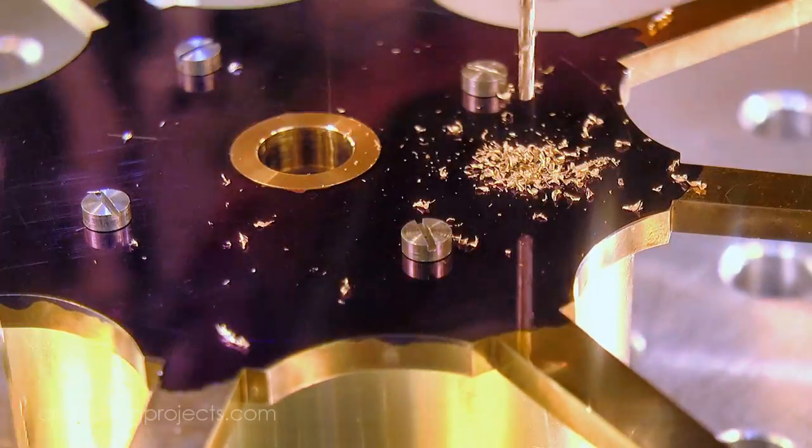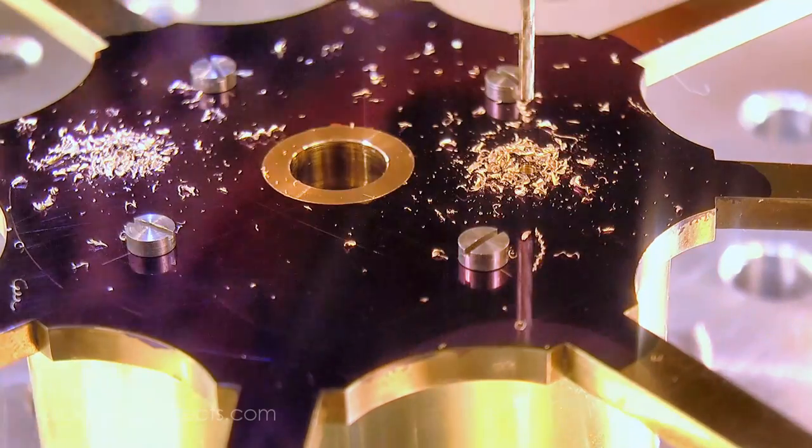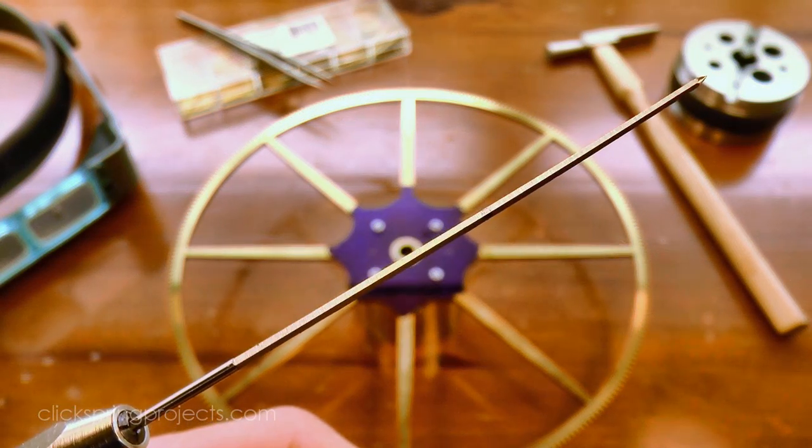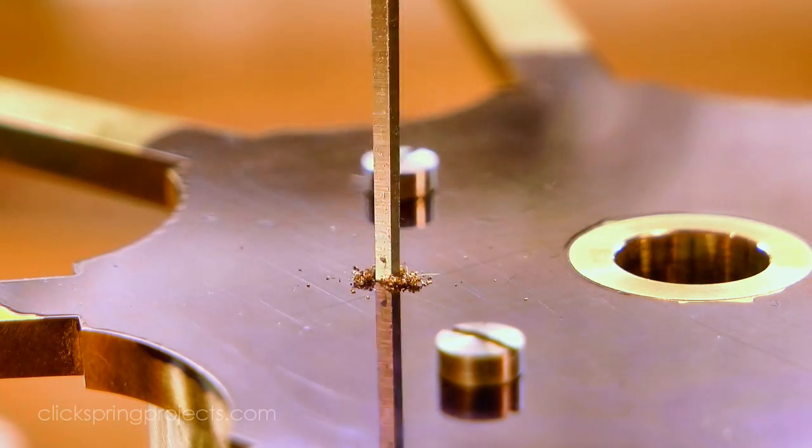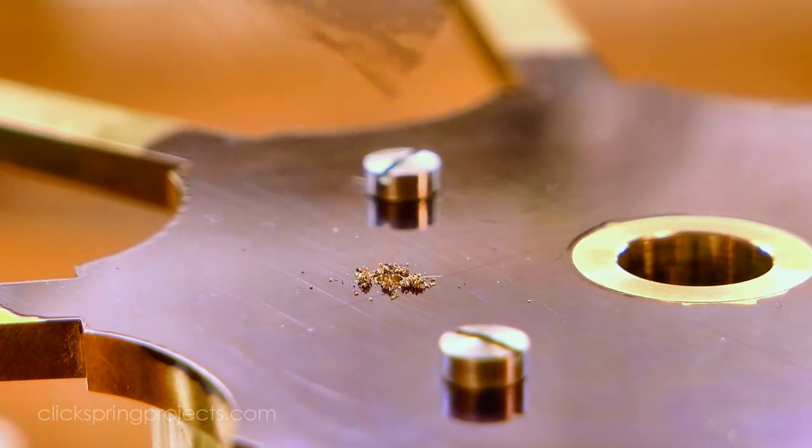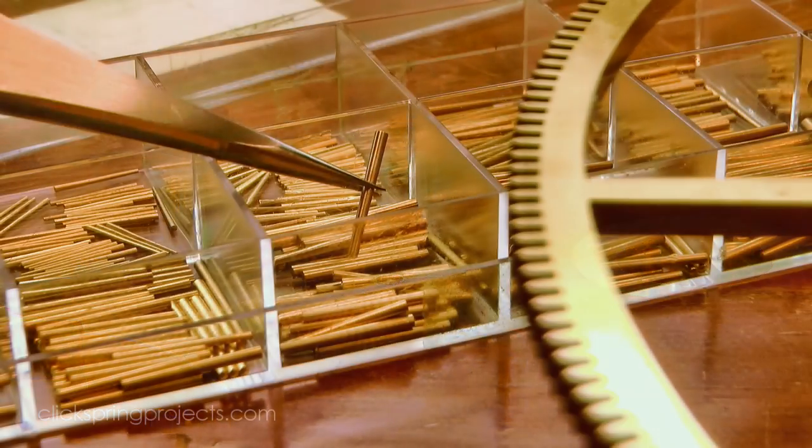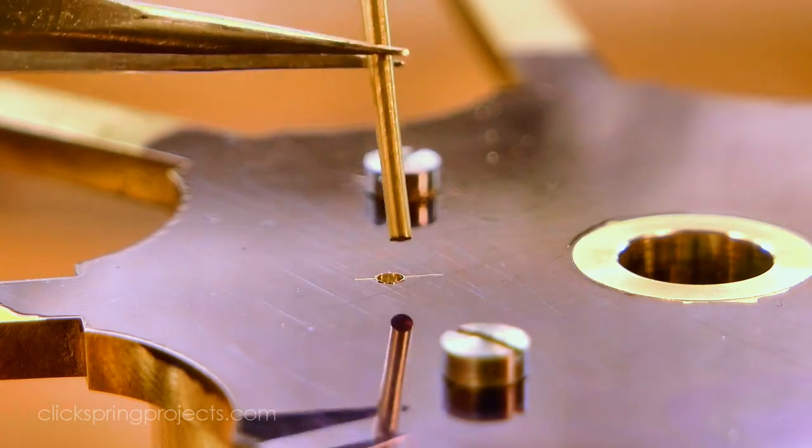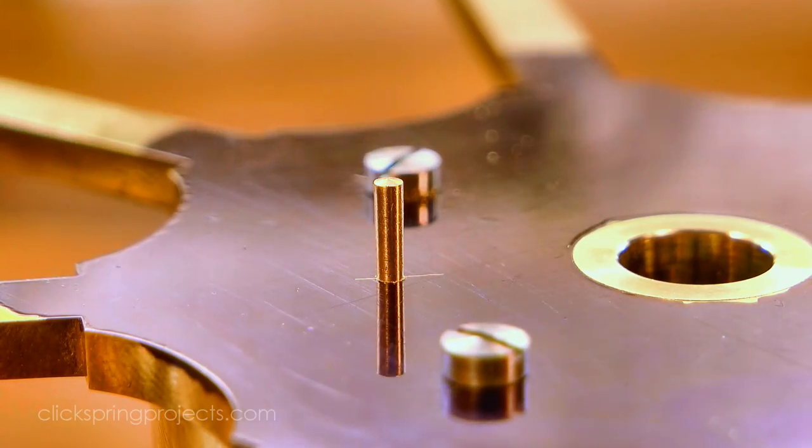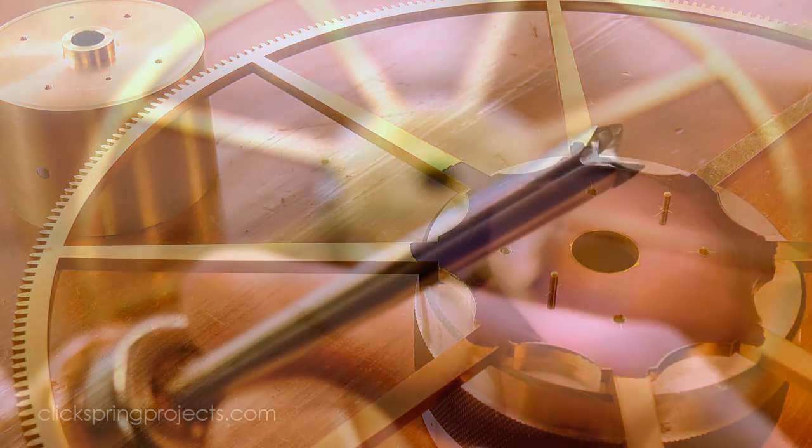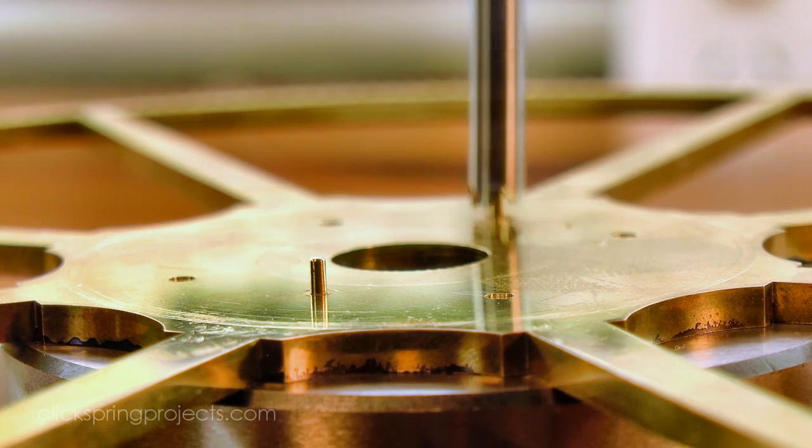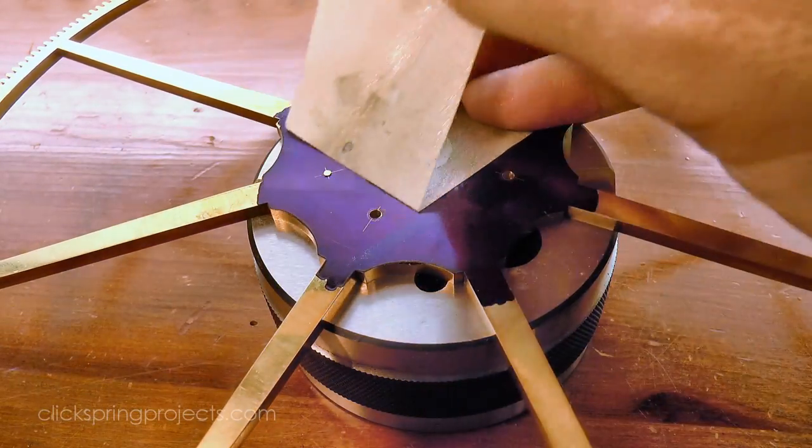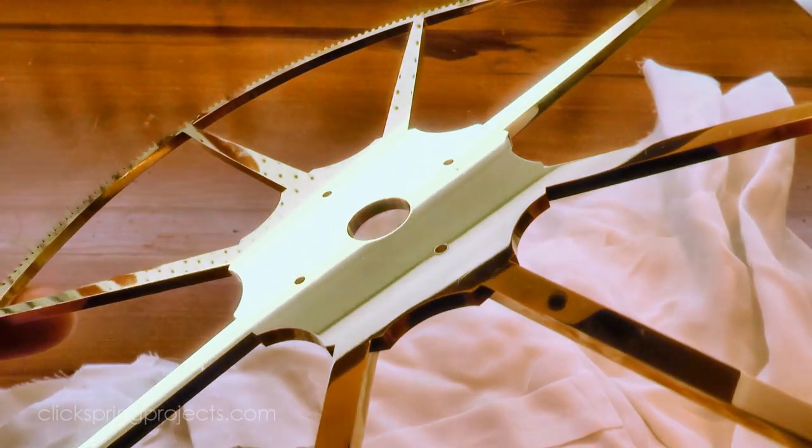I also put in a pair of register pins, to ensure that the wheel can only go on the one way when it's reassembled after servicing in the future. After the pins are inserted, I trim them back to stop them protruding into the barrel, and then chamfer the edges with this chamfering tool. A quick touch with a file and some emery paper, and that upper surface of the pins has blended nicely into the surrounding metal of the wheel.